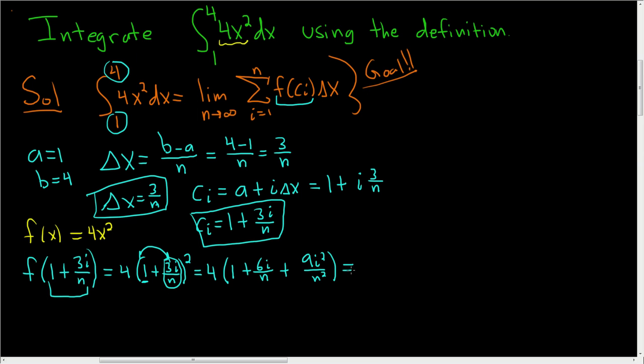Let's go ahead and multiply the 4 through. So 4 times 1 is 4 plus, and then 4 times this thing here is 24i over n, and then it looks like the last one is going to be 36 i squared over n squared. So this here, this is our f of c sub i.